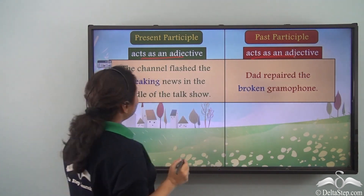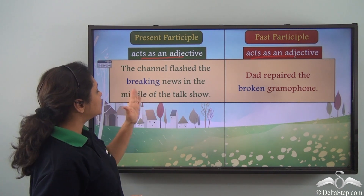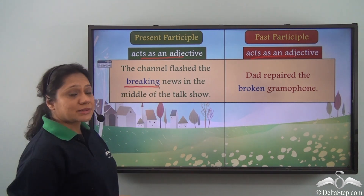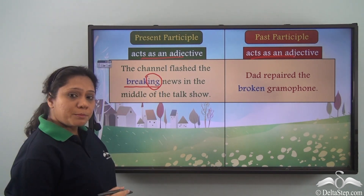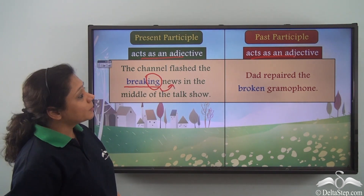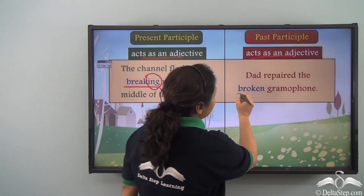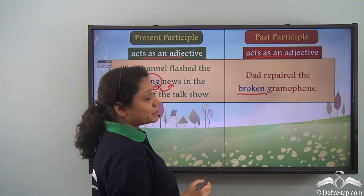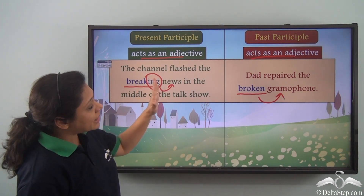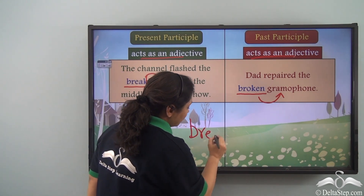In the sentence 'The channel flashed the breaking news in the middle of the talk show,' 'breaking' is the present participle because it is the -ing form of the verb 'break' and it is describing the noun 'news.' In the second sentence, 'Dad repaired the broken gramophone,' 'broken' is the past participle describing the noun 'gramophone.' Both 'breaking' and 'broken' have been formed from the same verb, 'break.'